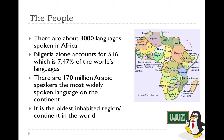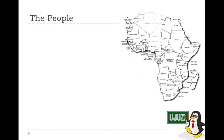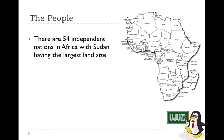Following the story of evolution, the first origins of man are from Africa. There are 54 independent nations in Africa, with Sudan having the largest land size.